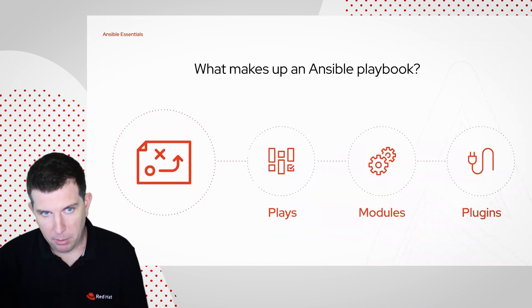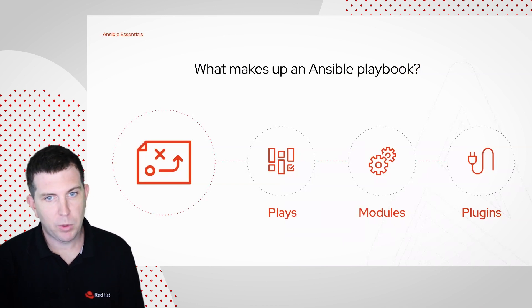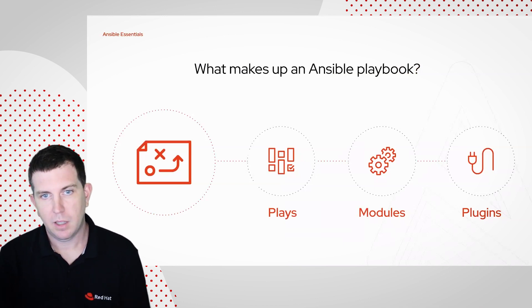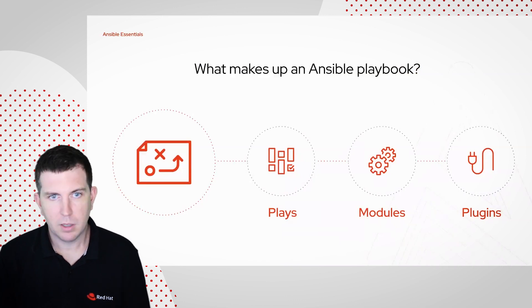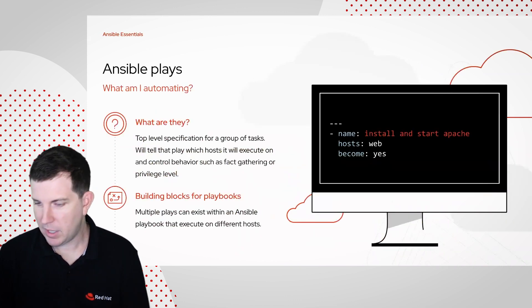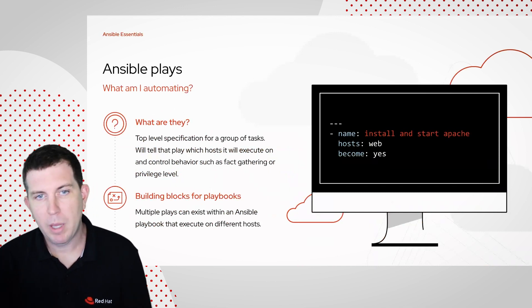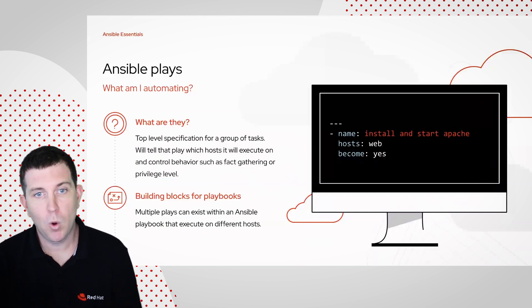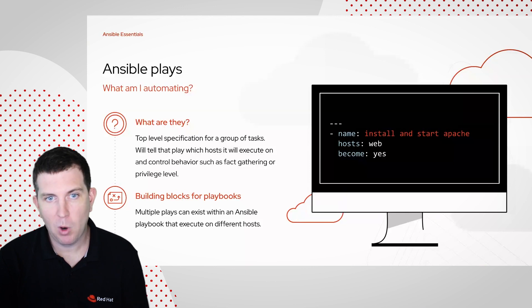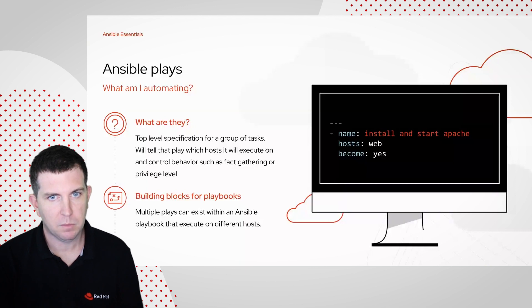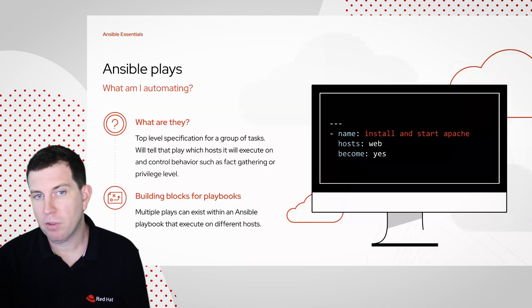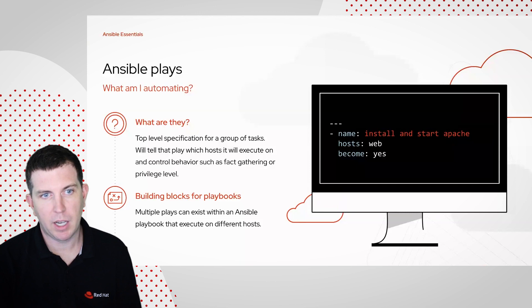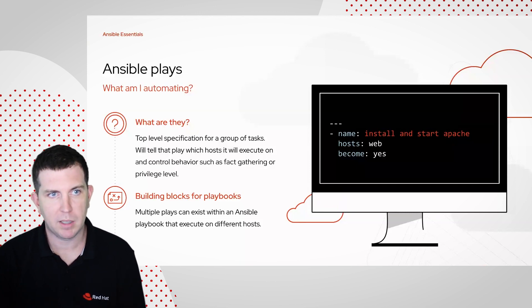So what makes up a playbook? We have plays, we have modules, and we have plugins — these are the components of a playbook. A playbook can actually have multiple plays. The play stanza was at the top; it said 'install and start Apache,' it told us what host it was on. This could be a host named web, or it could be a group of web servers that we could run on simultaneously in parallel. We can also put our privilege escalation here — become: yes allows us to pseudo into those boxes by default.